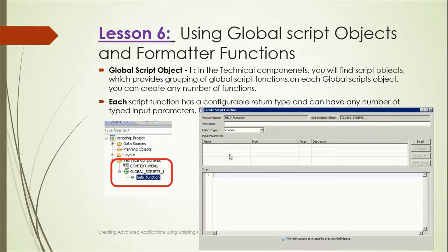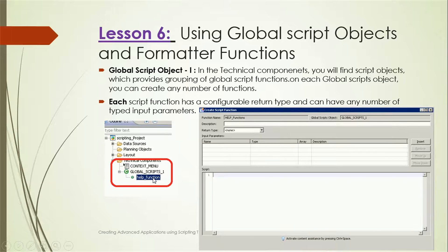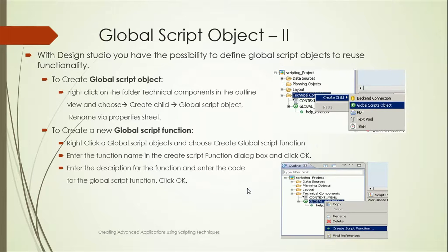Another global scripting option involves Global Script Objects, found in the Technical Components panel on the left side of Design Studio. These script objects provide grouping of global script functions. On each global script object you can create any number of functions. Each script function has a configuration, return type, and can have any number of typed input parameters. You can add scripting code inside the function to define its logic.